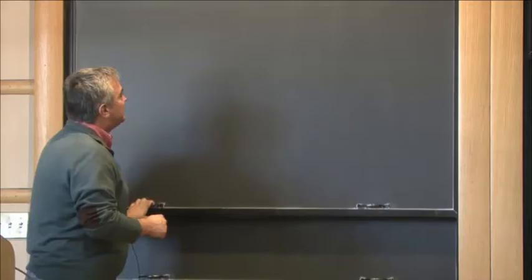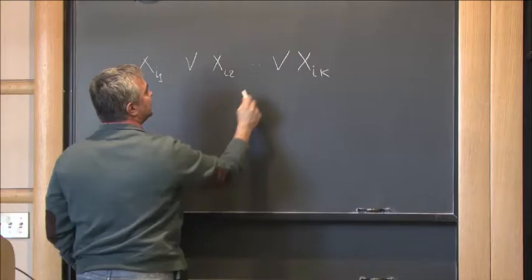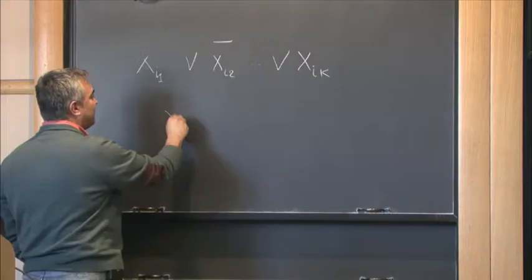k-CNF is just the case where you have Boolean variables: x_{i1} OR x_{i2} OR ... OR x_{ik}, where k is in k-CNF, and then maybe some of them are negated. So the example I gave before was a 3-CNF.